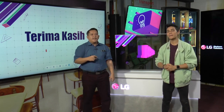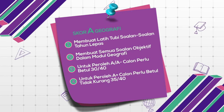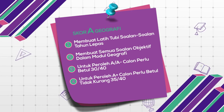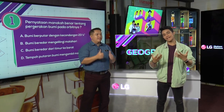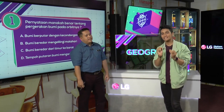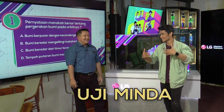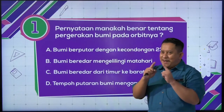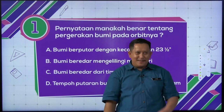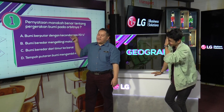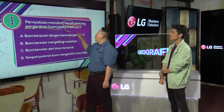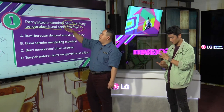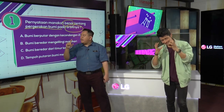So now, let's take action. Now we are going to test the details with Afiq. Afiq is a member of the SPM. So I would like to study with Afiq. We have five questions that we want to study. Penyataan manakah yang benar tentang pergerakan bumi pada orbitnya? Mana Afiq rasa benar tentang pergerakan bumi pada orbitnya? Kita kena faham dulu.